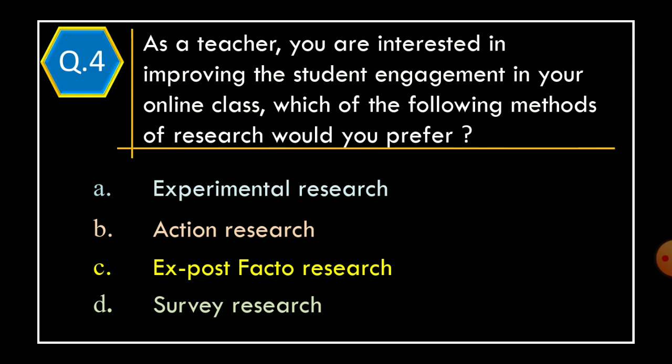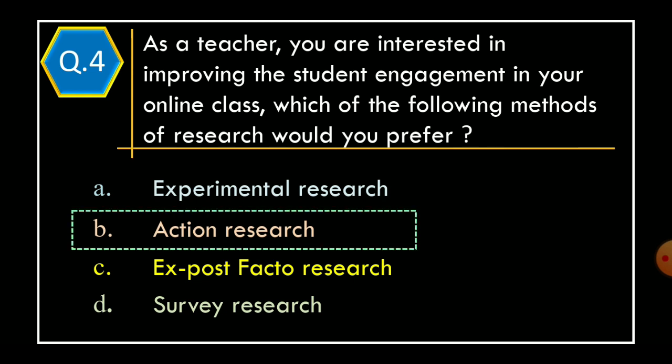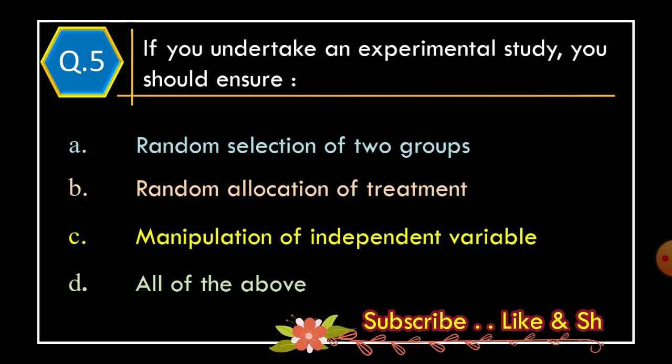Question 4: As a teacher, you are interested in improving the student engagement in your online class. Which of the following methods of research would you prefer? Option A: experimental research. Option B: action research. Option C: ex post facto research. Option D: survey research. The correct option is Option B, action research.